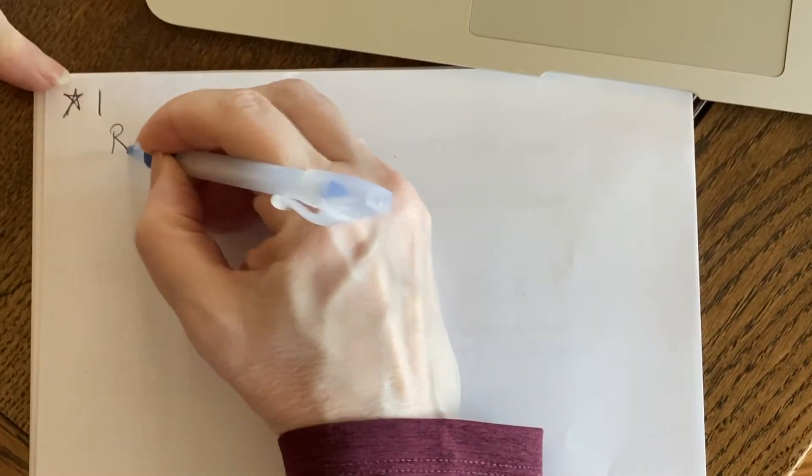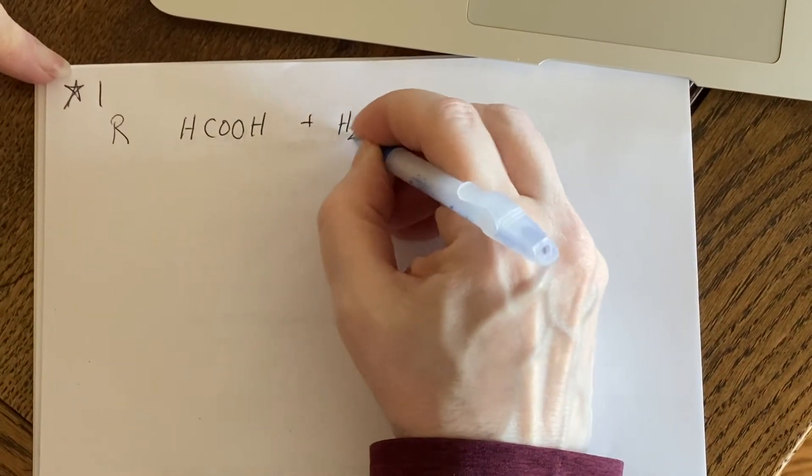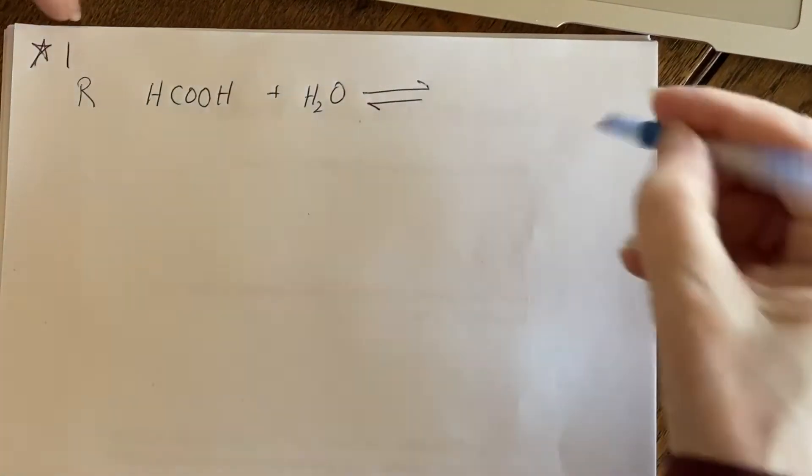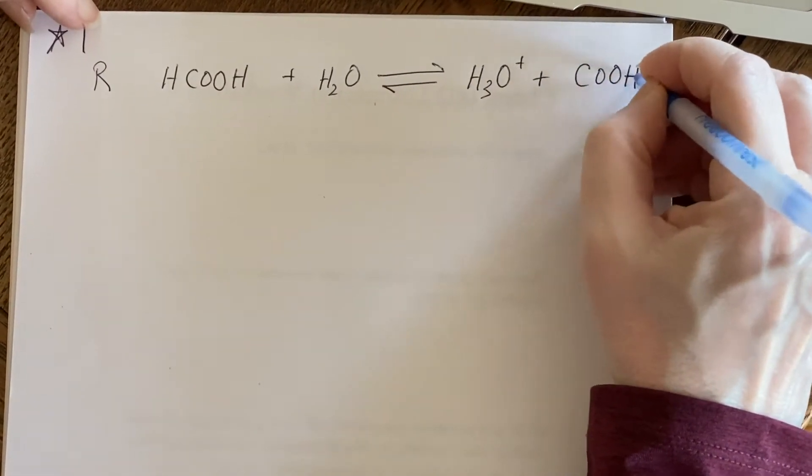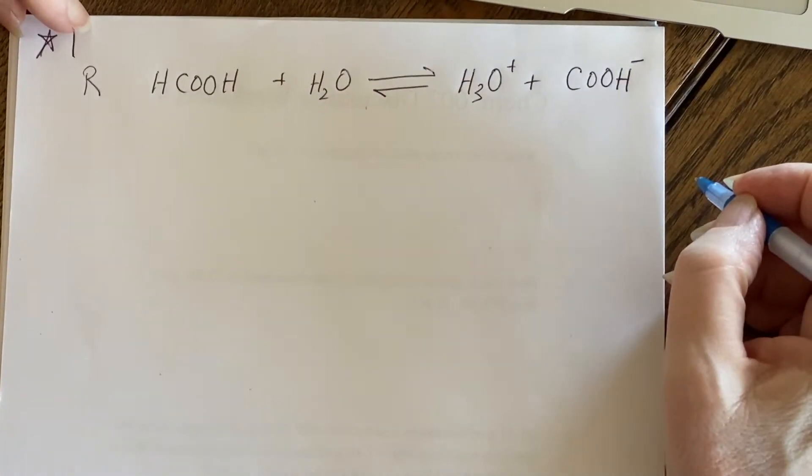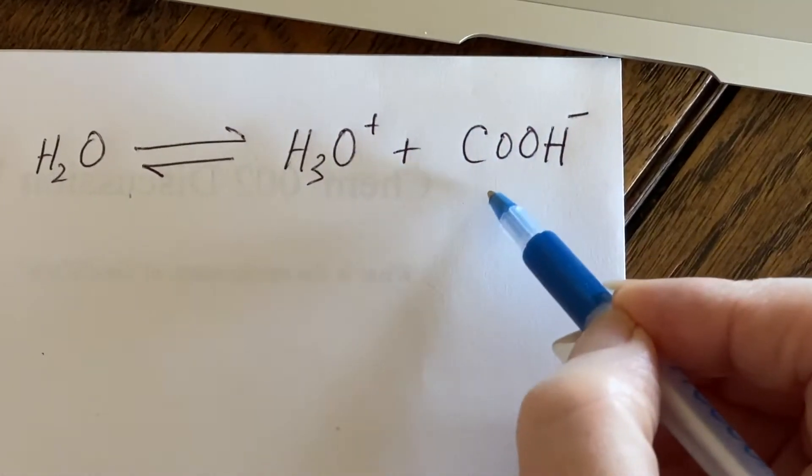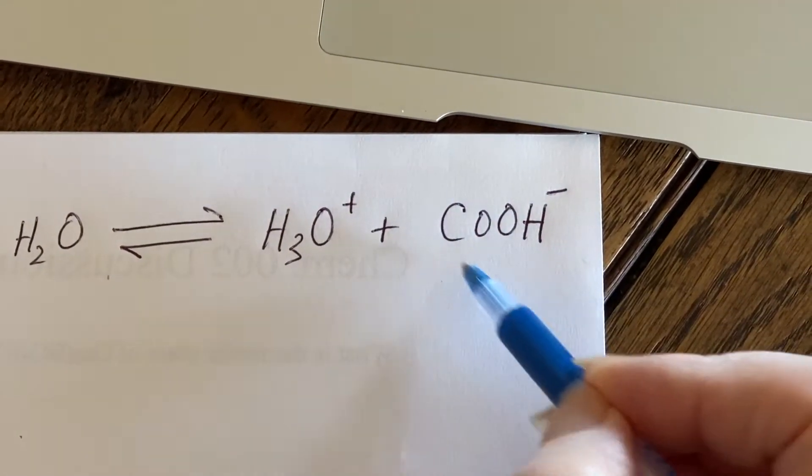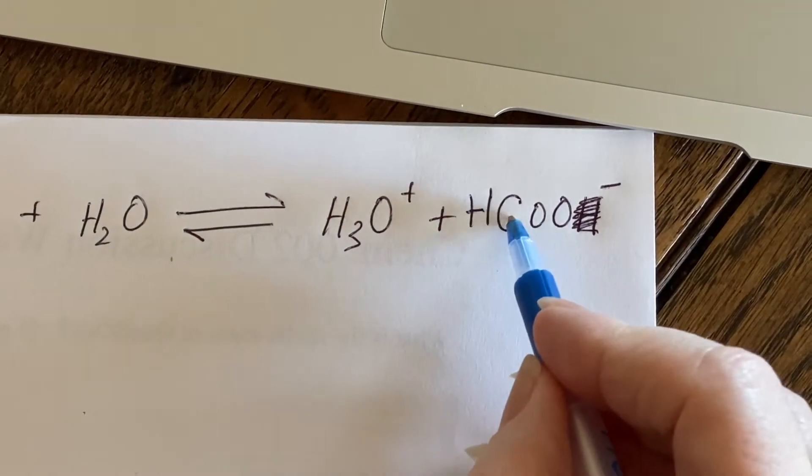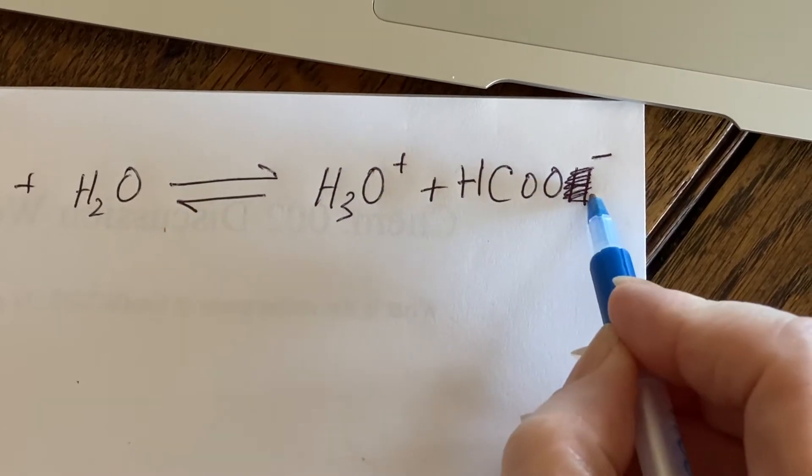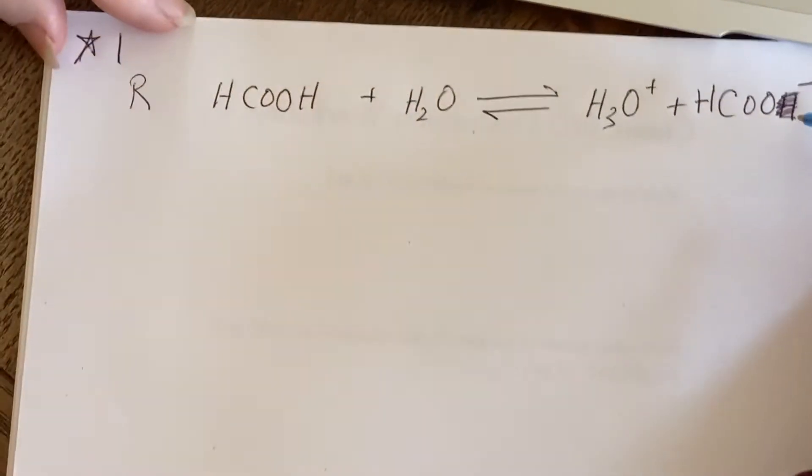The first thing we're going to do is the reaction. We have the formic acid and it is interacting with the water, forming an equilibrium with hydronium ions. You'll notice I'm writing this the wrong way. I shouldn't write it that way. Why shouldn't I write it that way? Because that's the H that it loses. Remember our discussion about the COOH group? I'm going to put it here. This one was bound to the carbon and didn't get loose. The one that got loose was bound to an oxygen.